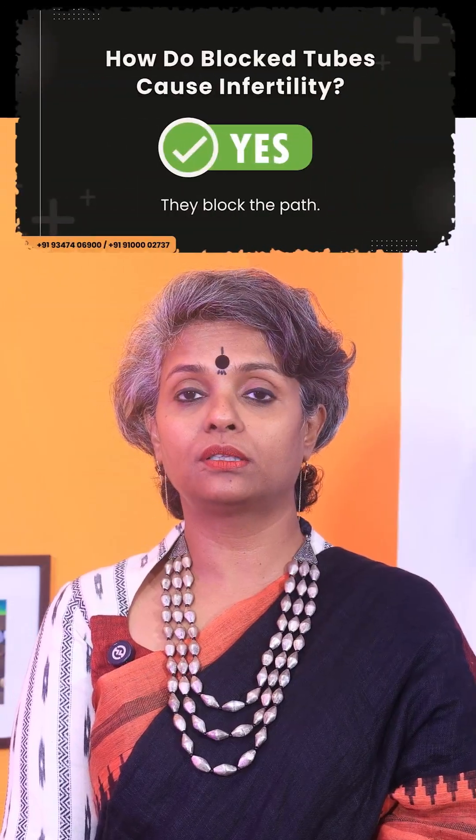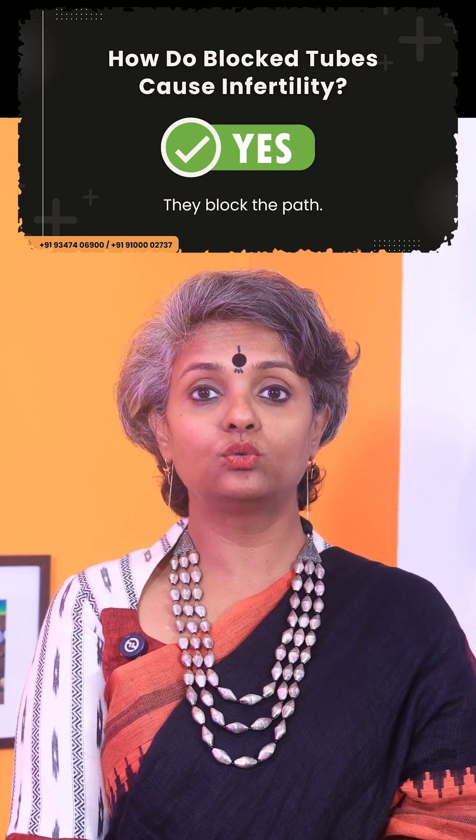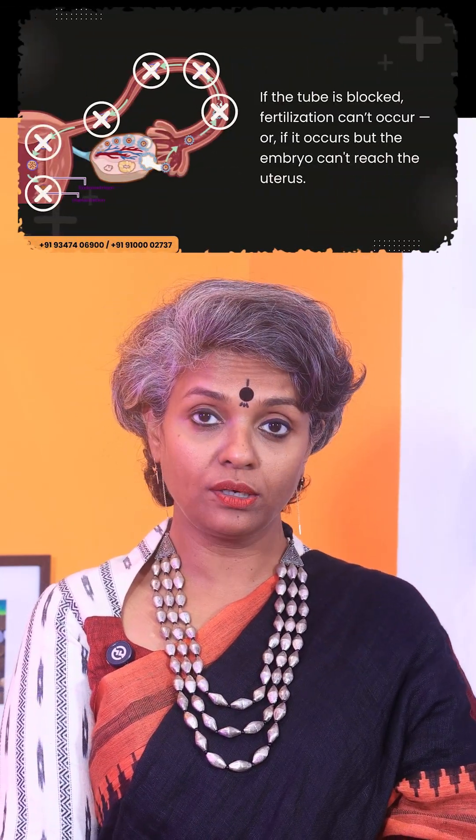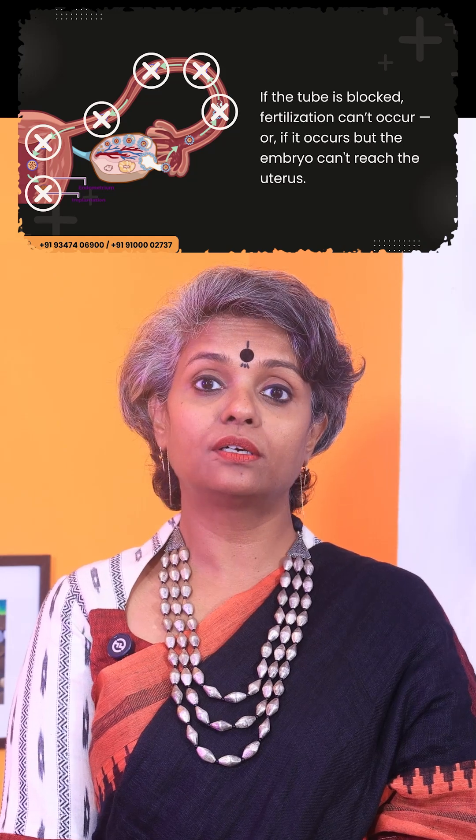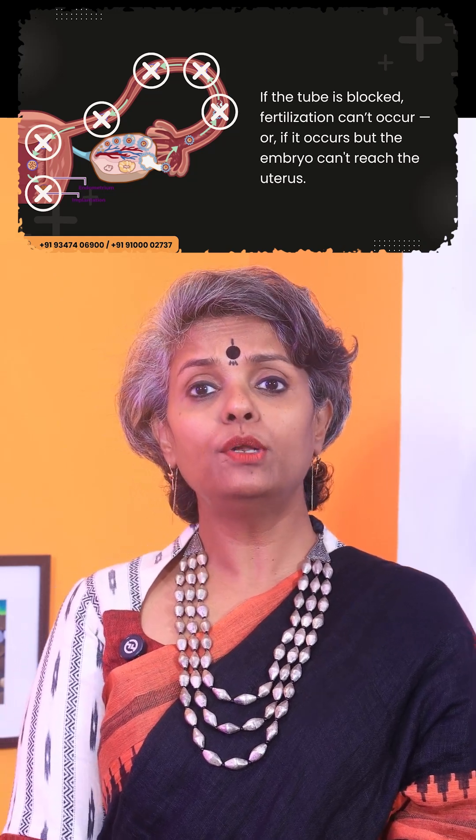How does it affect infertility? The answer is very simple — they block the path. Sperm travel from the vagina through the cervix and uterus into the fallopian tube. The egg is released from the ovary and picked up by finger-like fimbria at the end of the tube. Fertilization happens in the tube, and if the tube is blocked, fertilization can't occur. Or if it does occur, the embryo can't reach the uterus, which may lead to ectopic pregnancy, which is a life-threatening condition.